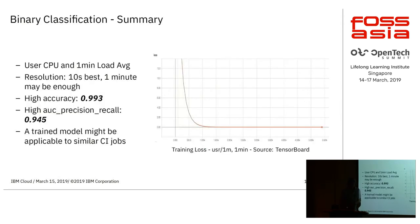To summarize the binary classification results: we found that a 10-second sampling interval is best, but one minute may be enough, and we can achieve very good accuracy and a very good precision-versus-recall curve. The training loss graph decreases smoothly and consistently.